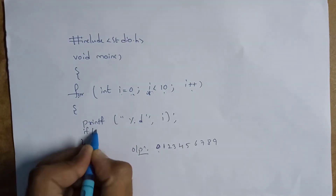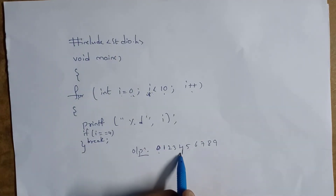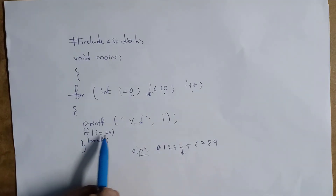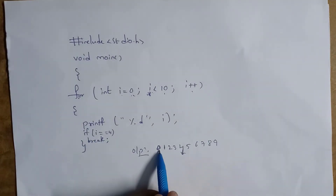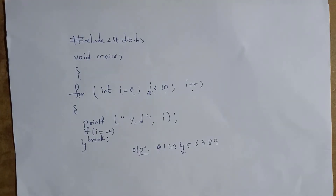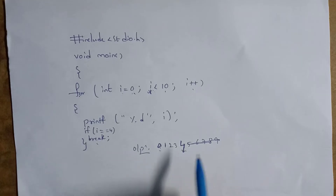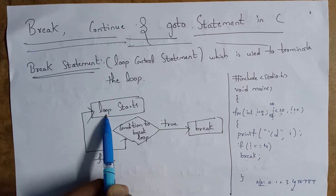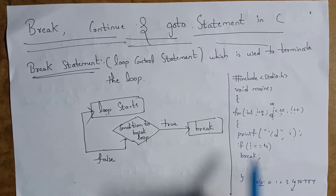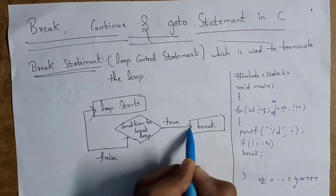Now I am using the break statement: if i equals 4, break. You need a semicolon after break. That means if i reaches 4, I want to break the loop. Whenever i reaches 4 the loop breaks, so the output will be 0, 1, 2, 3, 4. Inside the for loop I write the condition to break: if i equals 4, break. If condition is true it breaks; if false it continues.